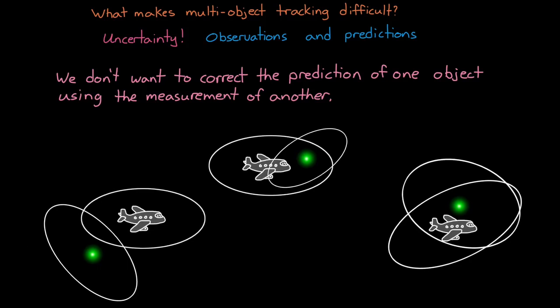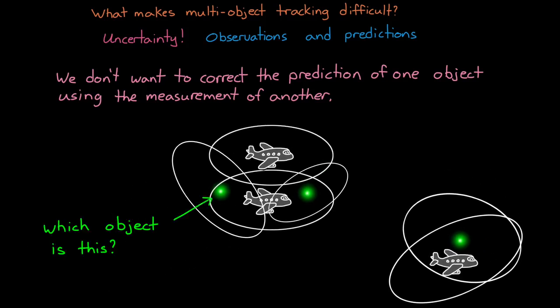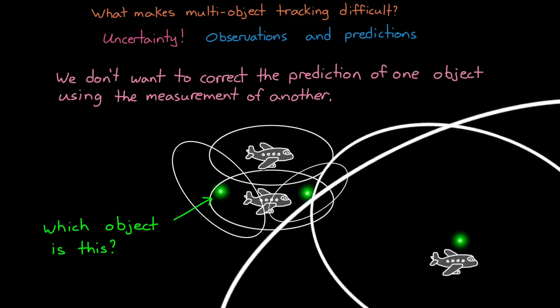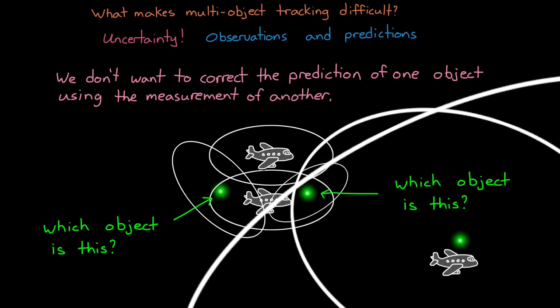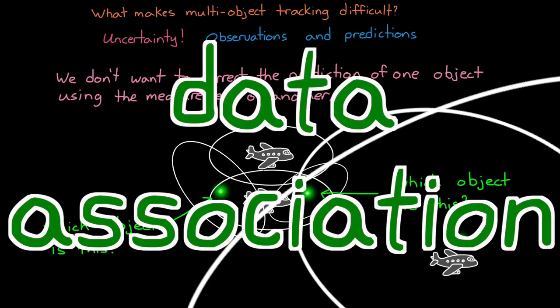The tricky part, however, comes when objects are close enough to each other, or our uncertainty is great enough that a measurement could be of more than one object. Now we have some figuring out to do. And this is the data association problem. We have to associate the detections with the right objects.